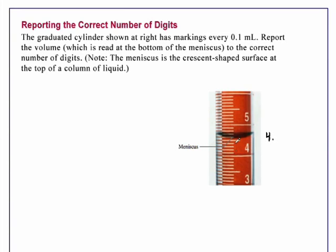Each of the divisions is a tenth of a milliliter, and the meniscus is between the fifth division and the sixth division.